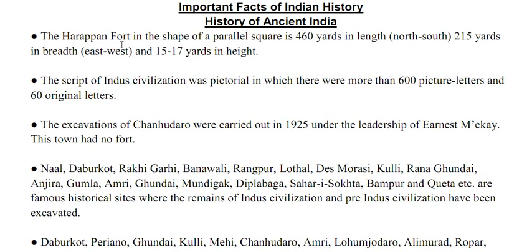The Harappan fort is in the shape of a parallel square — 460 yards in length north to south, 215 yards in breadth east to west, and 15 to 17 yards in height. This helps you visualize the shape of the Harappan fort.